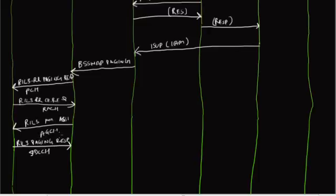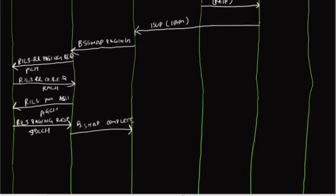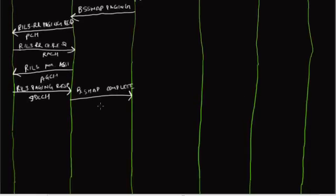The paging response message contains the TMSI of the mobile and the mobile characteristics, and it establishes the layer 2 signaling between the MS and the base station. The BSS forwards this message to the MSC VLR in a BSS Map Complete Layer 3 message. This also starts the SCCP — signaling connection control part — connection between the BSS and the MSC.